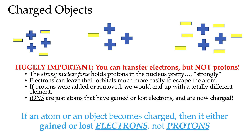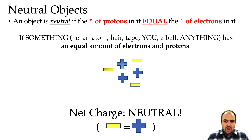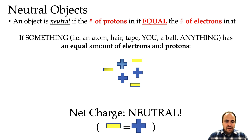If we wanted to determine if an atom or an object is charged, we need to look at its charge carriers. If an atom or object has an equal number of protons and electrons — an equal number of positive and negative charges — then we consider that object net neutral. Its net charge, the charge that's left over, is zero because all of the positives cancel with all of the negatives. So if something has an equal number of positive and negative charges, we call that neutral.